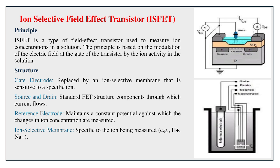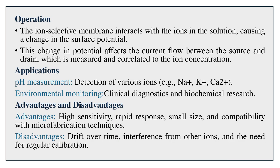ISFET Structure. Gate electrode: replaced by an ion-selective membrane that is sensitive to a specific ion. Source and drain: standard FET structure components through which current flows. Reference electrode: maintains a constant potential against which changes in ion concentration are measured. Ion-selective membrane: specific to the ion being measured and correlated to the ion concentration.